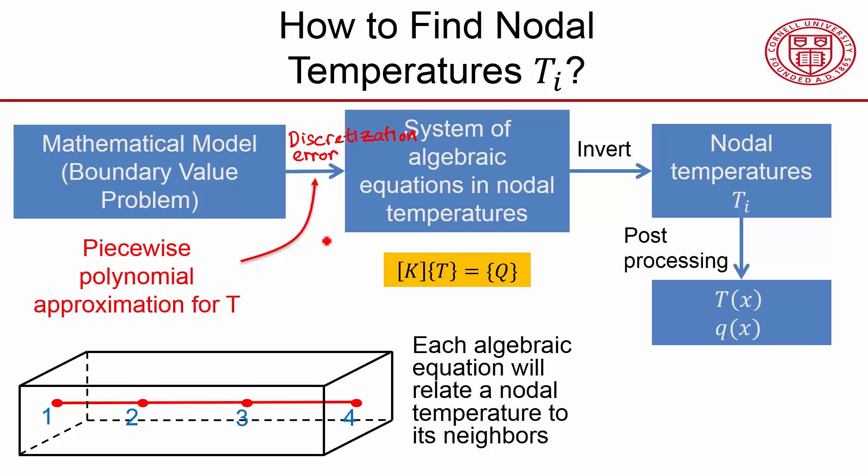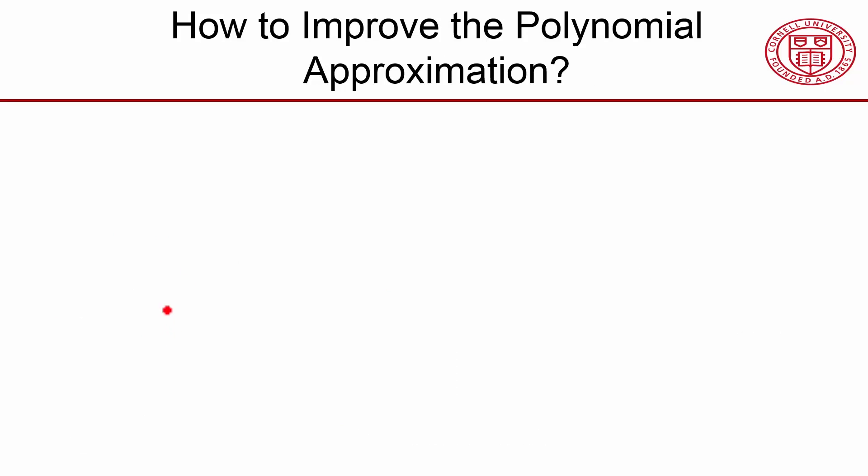And we can reduce the discretization error by improving our piecewise polynomial approximation. So how do we improve the polynomial approximation? There are two ways to do this.